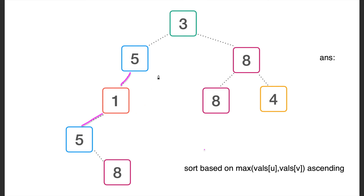The next edge to add has a max value of 5. The entire connected component it joins has a count of two 5s, but the other connected component (containing only node 3) has no 5s. So we don't update our answer and only add the edge.